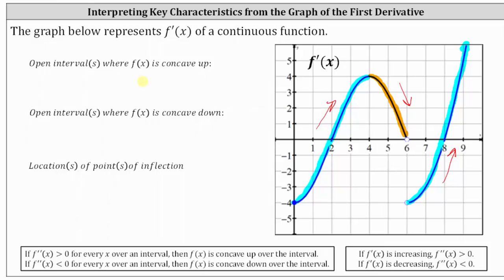So because the derivative function is increasing over the open interval from zero to four, we know f of x is concave up over this interval. It's also concave up over the open interval from six to infinity, giving us the union of the open interval from six to infinity. The first derivative is decreasing over the open interval from four to six, and therefore f of x is concave down over this open interval.